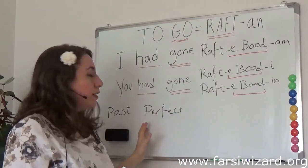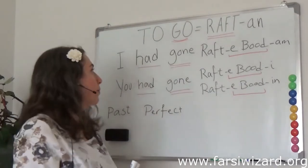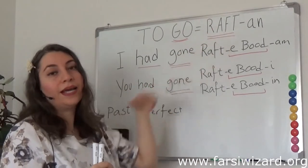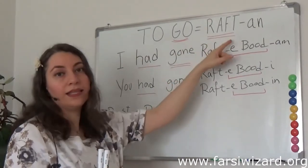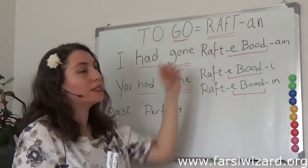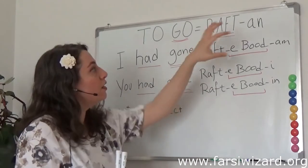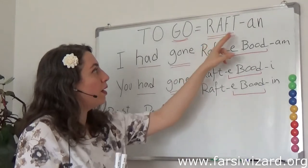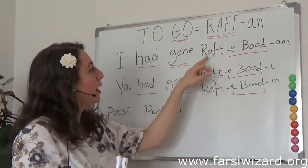Past perfect in Farsi has a very easy formula. You need to concentrate on the past stem, which is easily found by looking at the infinitive. For example, 'to go' in Farsi is rafdan — if you look that up in the dictionary, you find rafdan. You can get the past stem by dropping the ending.